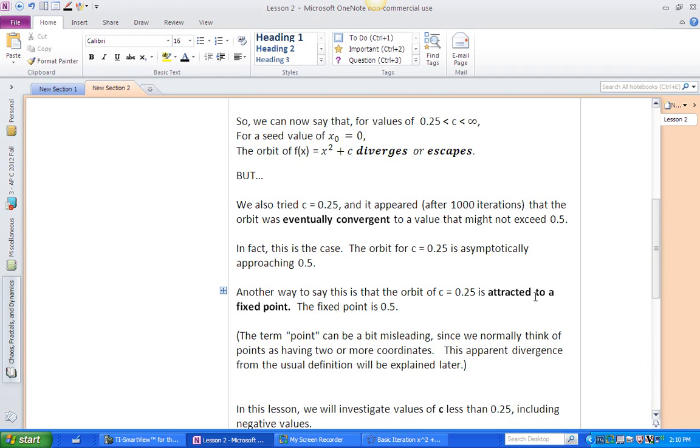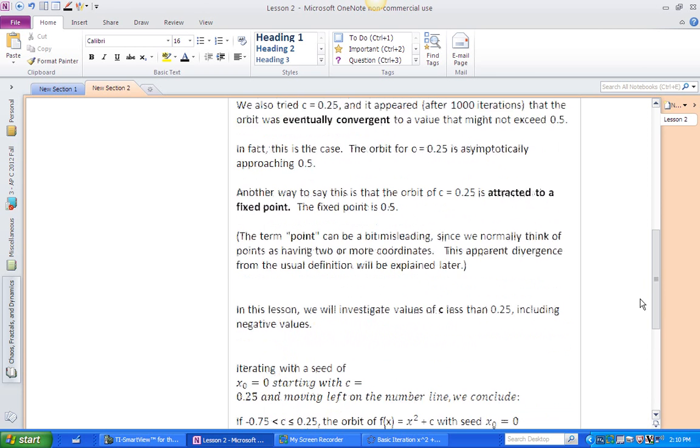Another way we're going to say this is that the orbit of C equals 0.25 is attracted to a fixed point, and that fixed point is 0.5. And we say point, and we normally think of point as having an ordered pair or ordered triplet, even if you have a three-dimensional system. So why am I calling this a point when it's a number? Right now, I just ask you to accept that. We'll use the term point to represent the number. And later on, we'll straighten this out and show you how it really is a point.